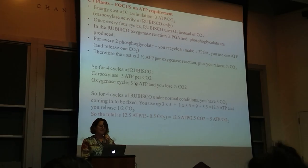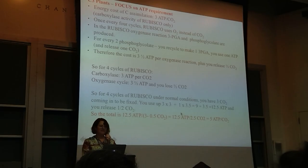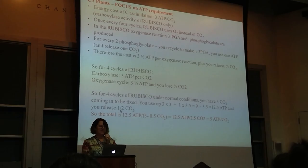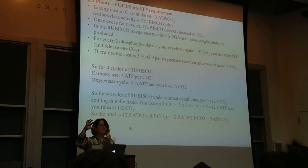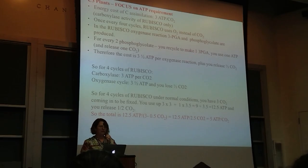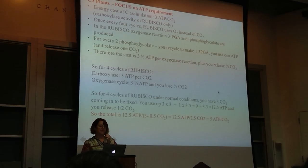So if we add this all up, for 4 cycles of RuBisCO: the carboxylase part is 3 ATPs per CO2, and the oxygenase part is 3.5 ATPs and you lose 0.5 CO2. For 4 cycles: 3 cycles × 3 ATP per CO2 plus 1 cycle of oxygenase × 3.5 ATP per CO2 = 12.5 ATP, releasing 0.5 CO2. The total ends up being 12.5 ATP divided by 2.5 net CO2 fixed, which is 5 ATP per CO2.